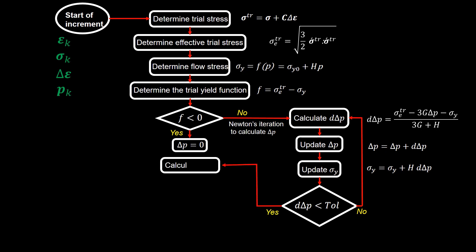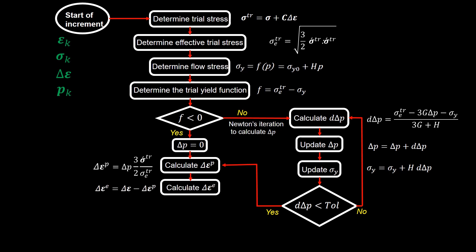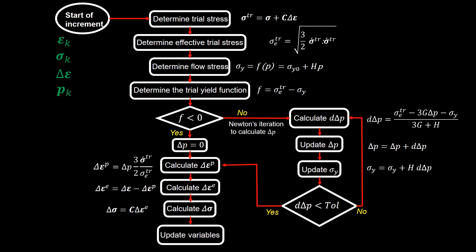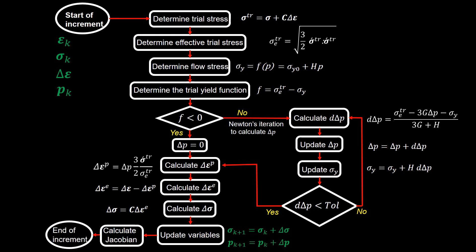After convergence of the Newton loop, calculate the plastic strain increment. Using the same steps for both elastic and plastic cases, once the plastic strain increment is obtained, calculate the elastic strain increment, then calculate the stress increment from the elastic strain increment, and finally update variables such as stress and effective plastic strain. In the last step, the Jacobian matrix is calculated — the necessity and method of calculating the Jacobian matrix will be discussed in a separate video. Please watch our next videos on deriving the Jacobian matrix and writing the UMAT subroutine for Von Mises plasticity, and subscribe to the channel for more videos on mechanics and simulations.